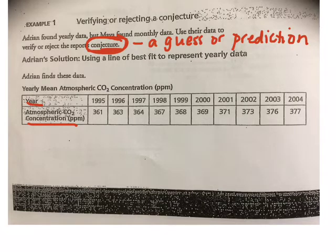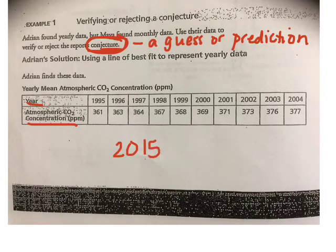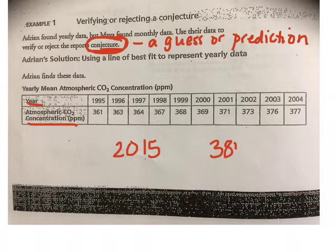Their prediction is that by 2015, the atmospheric carbon dioxide concentration would be 385 parts per million.